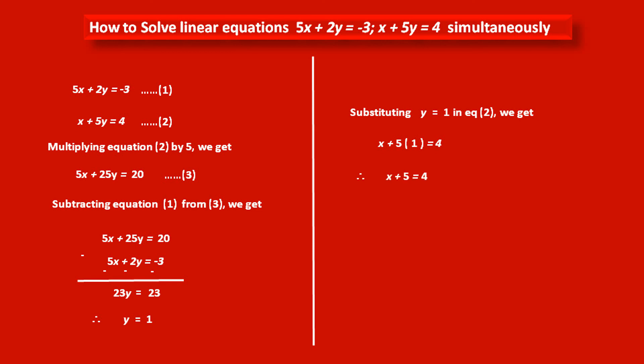Therefore solving this, we get x plus 5 is equal to 4. Therefore subtracting both the sides by 5, we get x is equal to 4 minus 5. That is minus 1. So this is the value of variable x, minus 1.